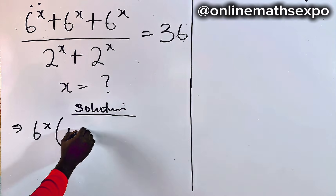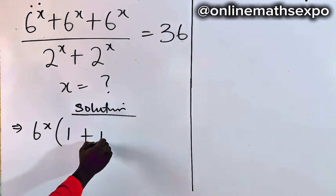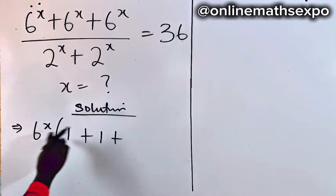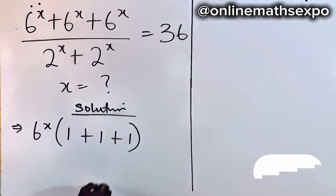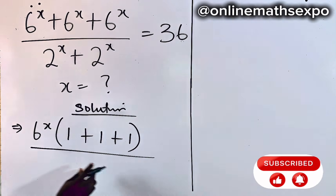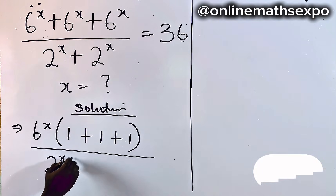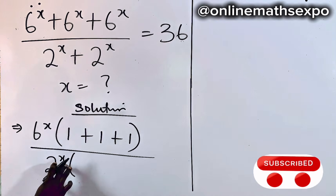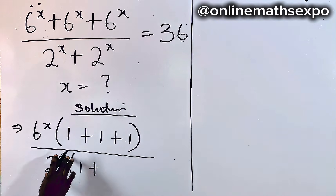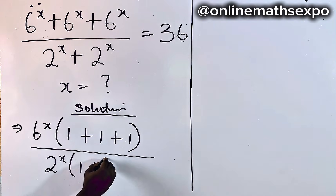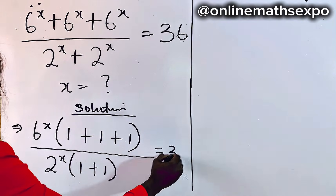Dividing gives you 1, plus dividing the next term also gives you 1, then dividing the last term also gives you 1. And for the denominator, you factor 2 to the x-power out. Use it to divide each term — it gives you 1, then dividing itself gives you 1. And this is equal to 36.